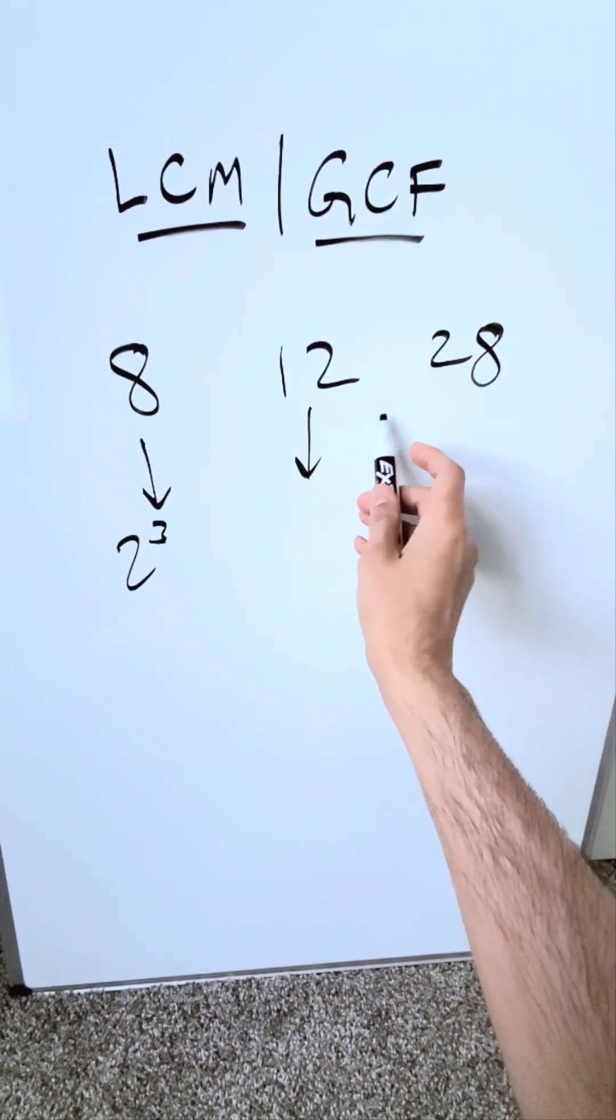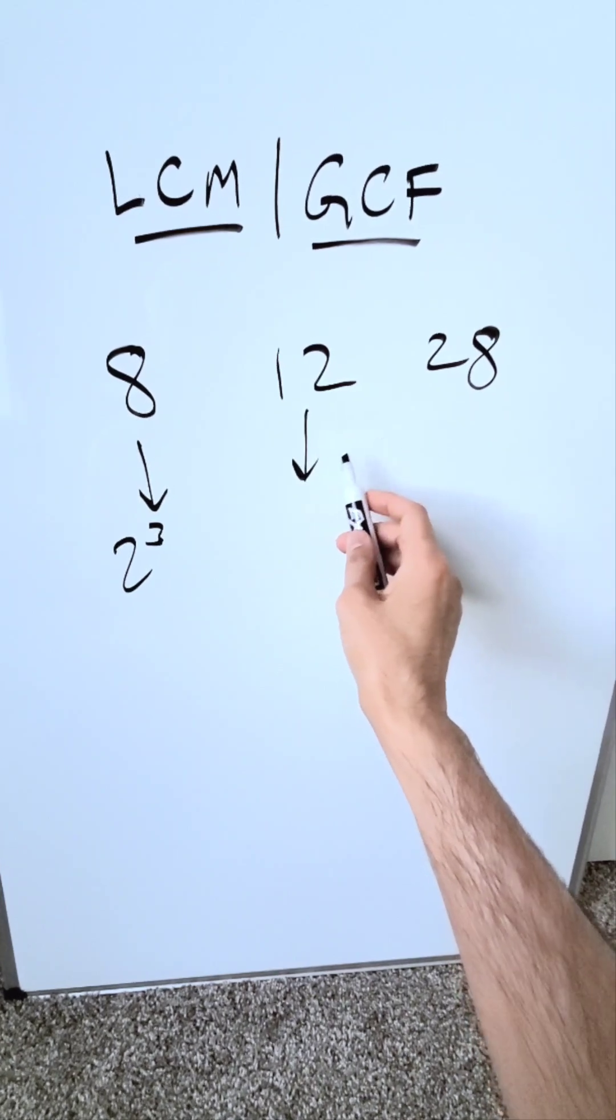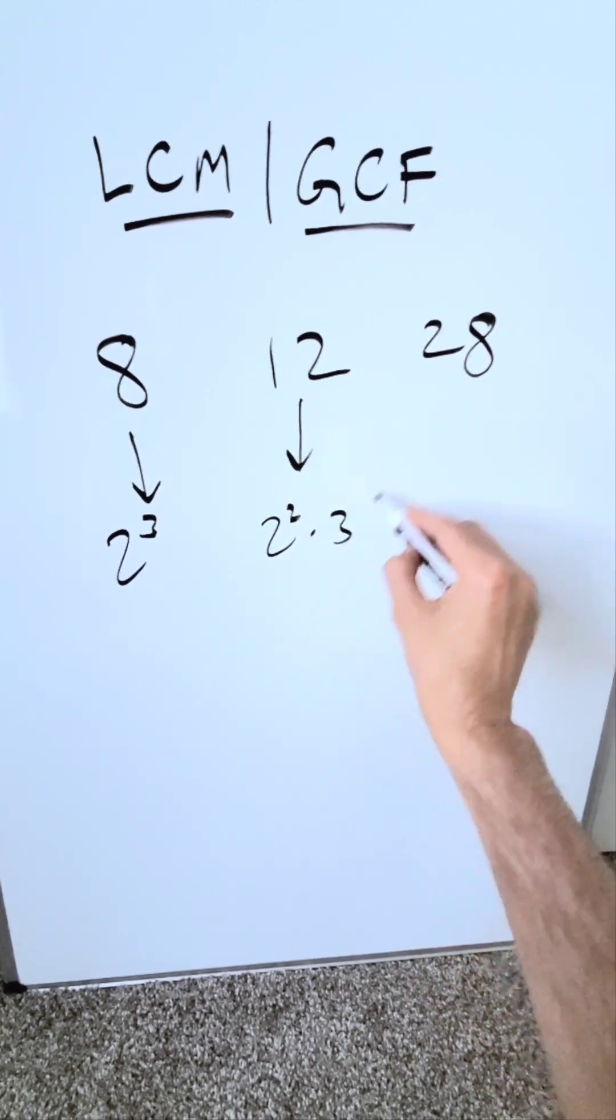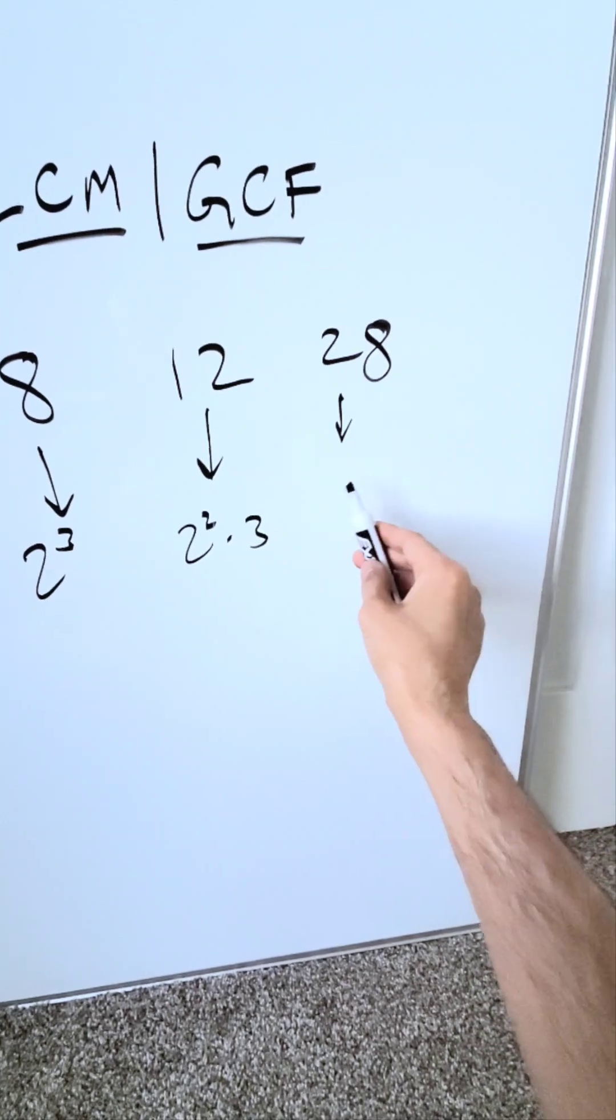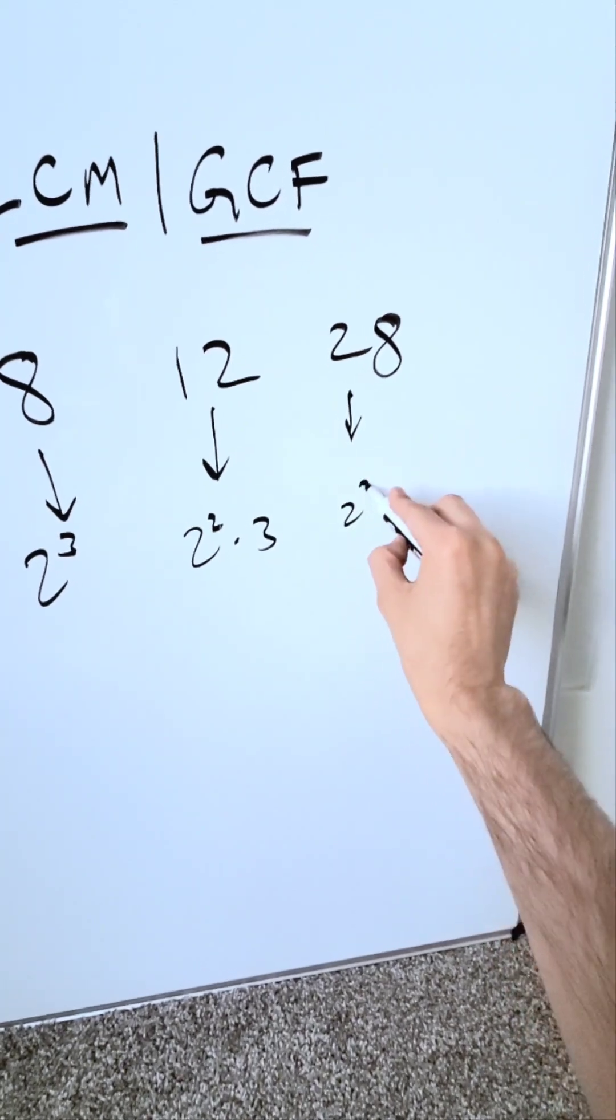We know this to be 4 times 3, but 4 is 2 times 2 times 3. We have 2 squared times 3. We know this to be 4 times 7. That's 2 squared times 7.